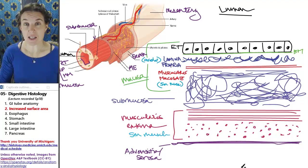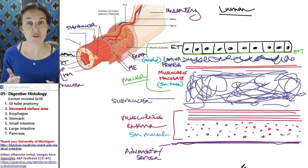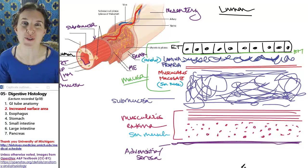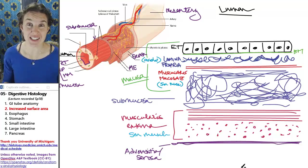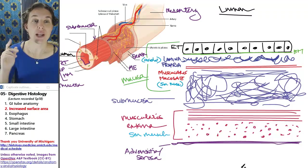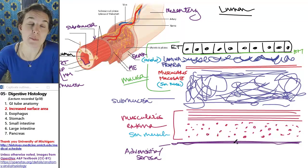We talked in the last lecture, we hinted about the different strategies, the different structural characteristics of the digestive tubing that will enable increased surface area. So now we're going to get a little more specific.